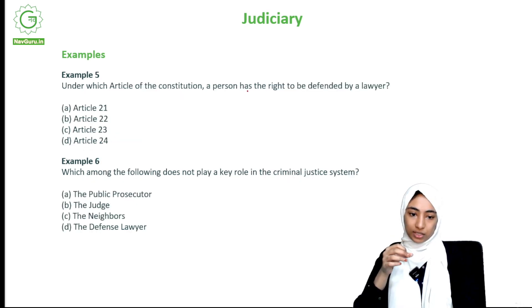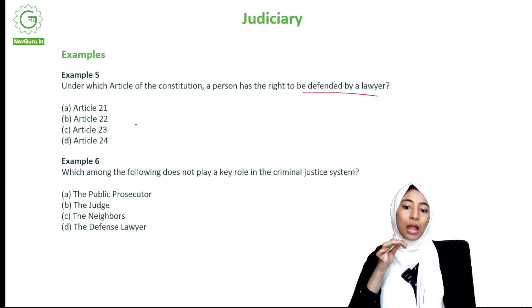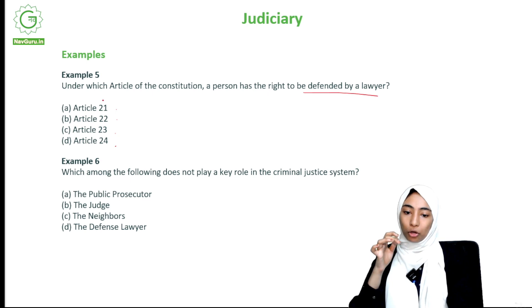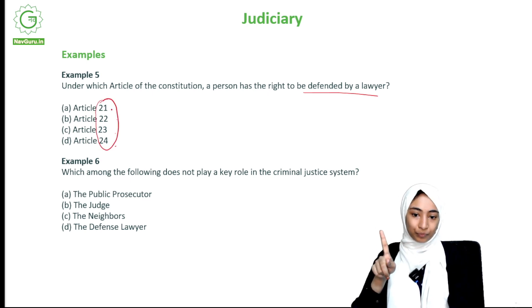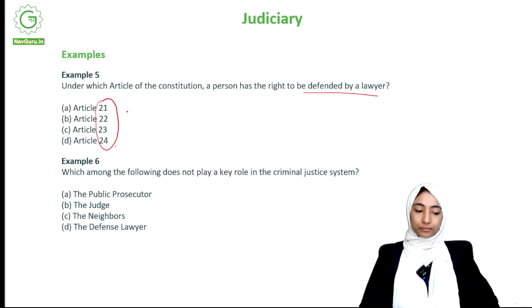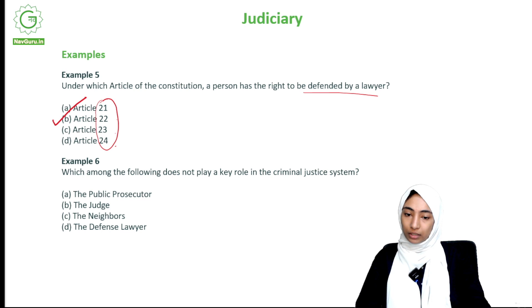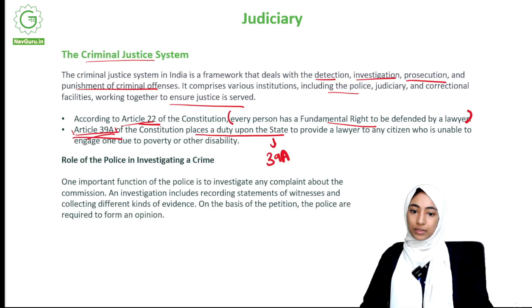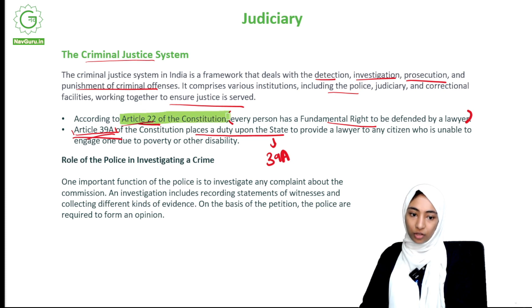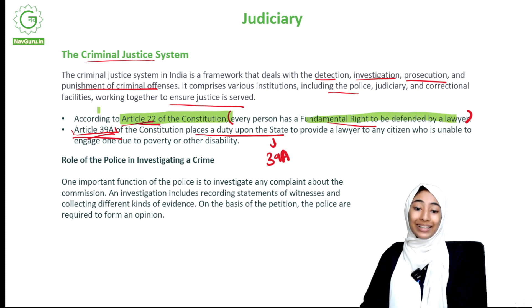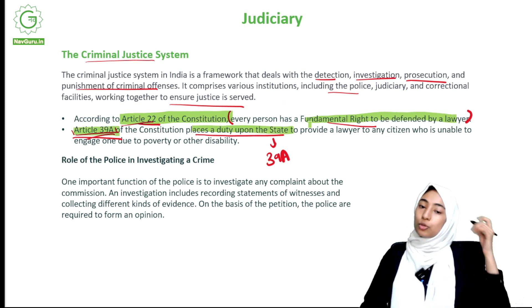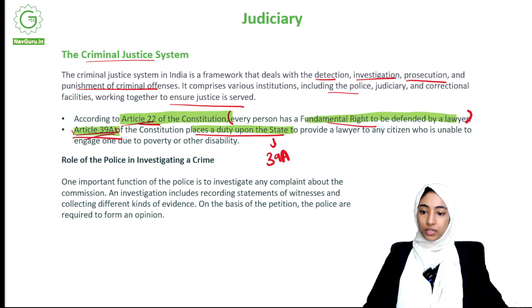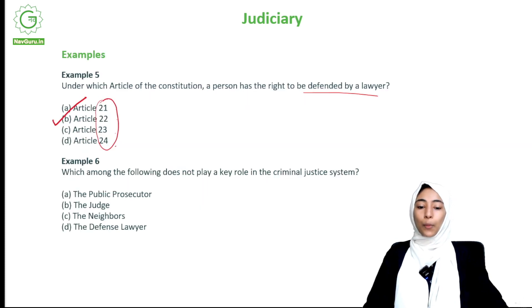Under which article of the constitution does a person have the right to be defended by a lawyer — Article 21, 22, 23, or 24? The answer is Article 22. According to Article 22, every person has a fundamental right to be defended by a lawyer. Also, Article 39A places a duty on the state to provide a lawyer to any citizen unable to engage one.